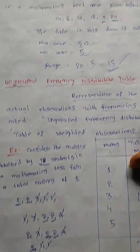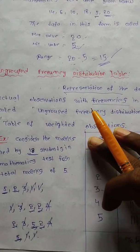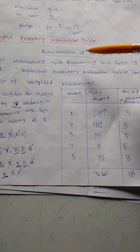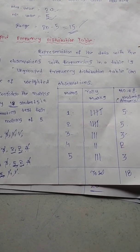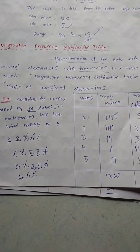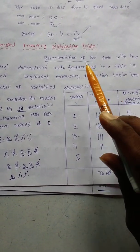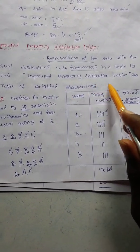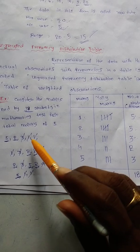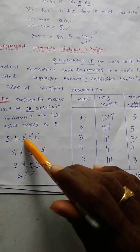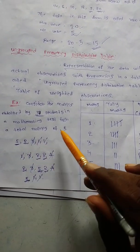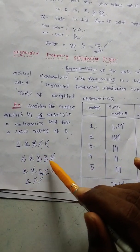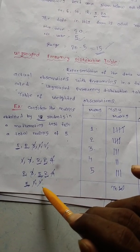Next, we move to the ungrouped frequency distribution table. Representation of the data with the actual observations and frequencies in a table is called an ungrouped frequency distribution table. Here, 18 students' marks in a test out of 5 are given: 5, 2, 3, 1, 1, 1, 1, 1, 3, 2, 2, 2, 4, 2, 3, 5, 2, 4, 5, 1, 1.